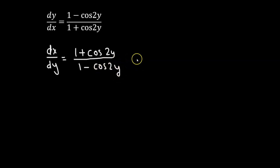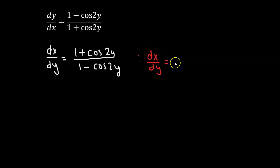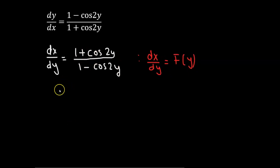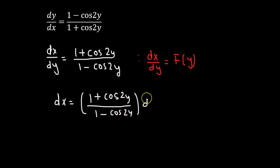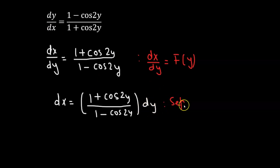Now we can see that this particular differential equation is of the form dx over dy equals to f of y. So the term on the right hand side is clearly a function of y. Now we can separate the differentials — that gives us dx equals to 1 plus cosine of 2y divided by 1 minus cosine of 2y, all multiplied by dy. So now our differential equation is in the separable form.